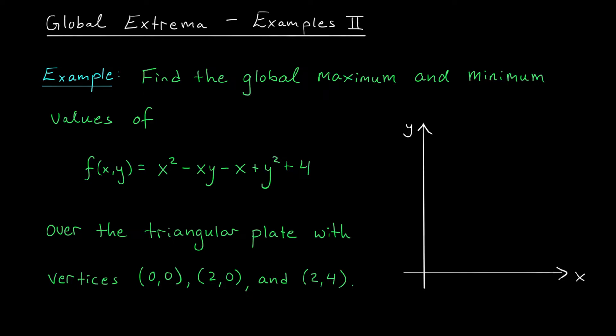Here, we're looking for the global max and min of the function f(x,y) equals x squared minus xy minus x plus y squared plus 4. And we're doing this over the triangular plate with vertices (0,0), (2,0), and (2,4).